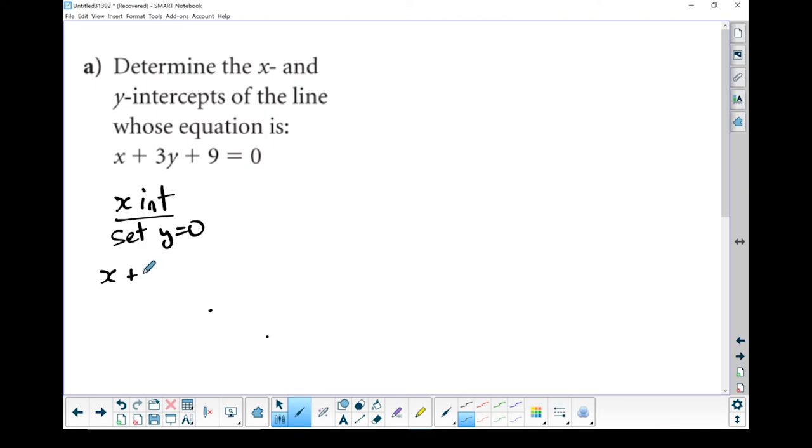So x plus 3 times, and instead of y, I'm going to put in a 0. So x plus 9 equals 0. Rewrite it without that 0. 3 times 0 is 0. So x plus 9 equals 0.